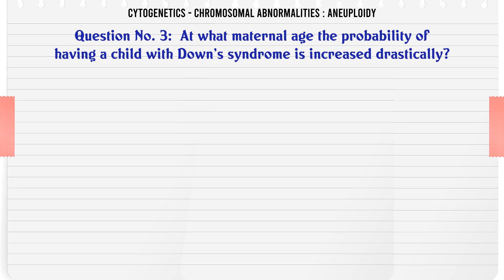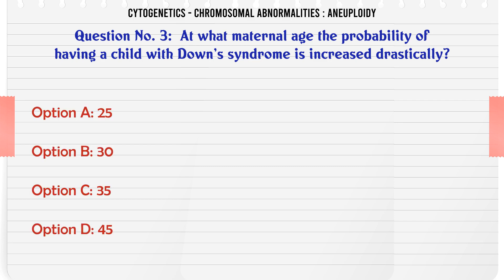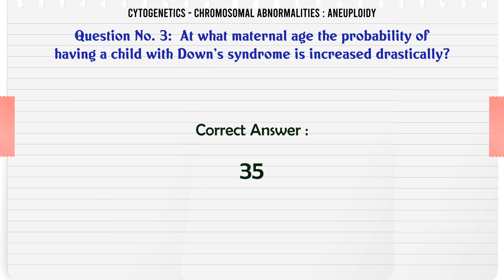At what maternal age does the probability of having a child with Down syndrome increase drastically? a. 25, b. 30, c. 35, d. 45. The correct answer is 35.